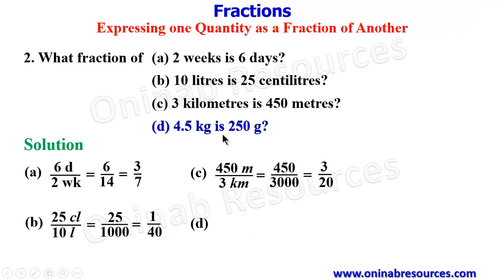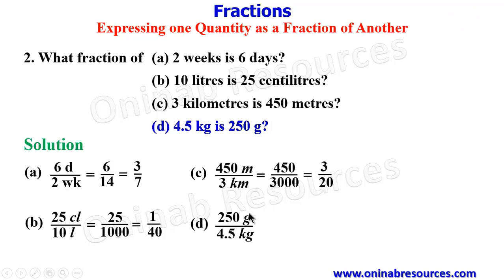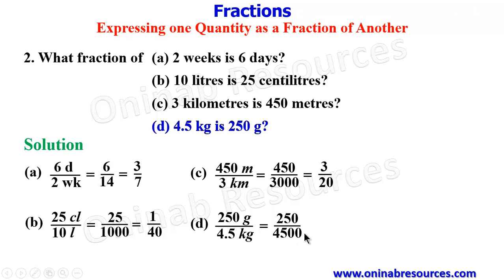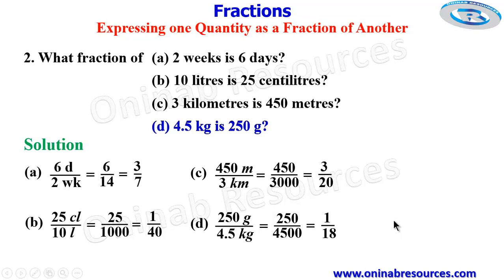We then go to D. For D, what fraction of 4.5 kilograms is 250 grams? 4.5 kilograms will form the denominator, while the numerator will be 250 grams. We convert 4.5 kilograms to grams by multiplying by 1,000, because 1,000 grams make 1 kilogram. So the fraction now will be 250 over 4,500. Simplifying, 25 divides both: 25 into 250 gives 10, and 25 divided into 4,500 gives 180 — so we get 1 over 18. So that's all for the solution of problem 2.